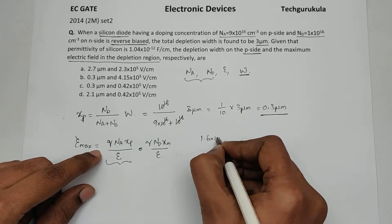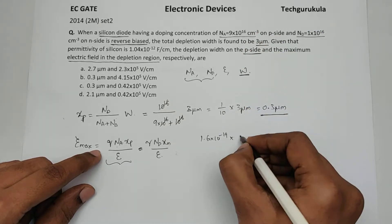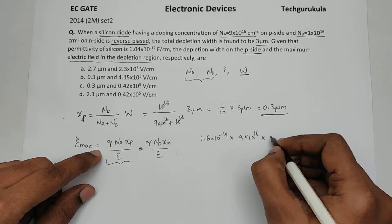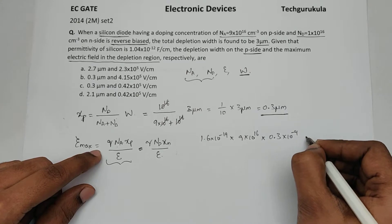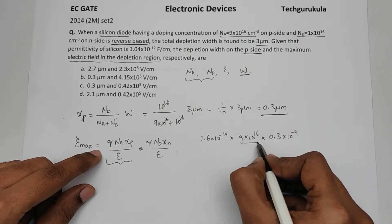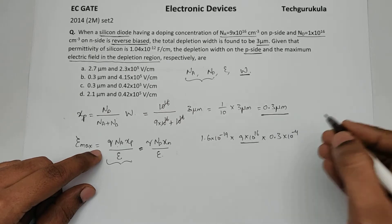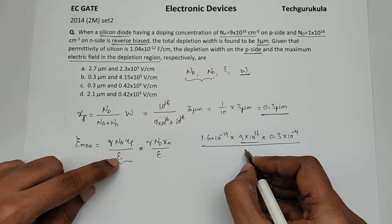Q 1.6 times 10 power minus 19 times Na is 9 times 10 power 16 times Xp is 0.3 times 10 power minus 4 centimeters. Because see, this concentration is written per centimeter cube. So everything is per centimeter kind of. So this also I am putting in centimeters.